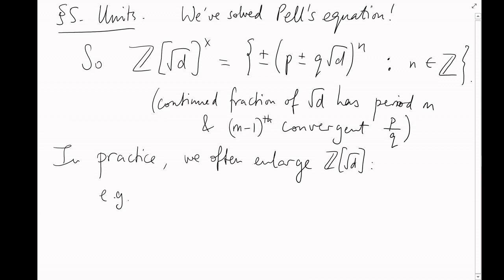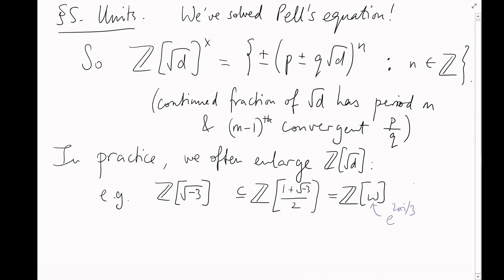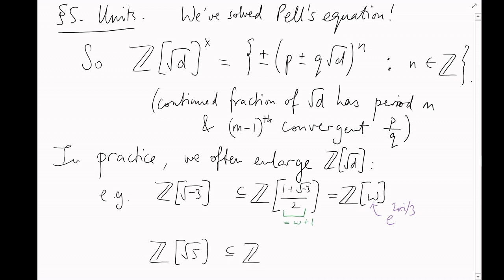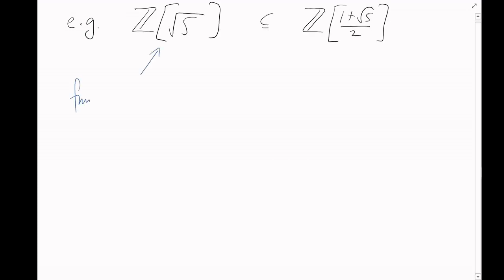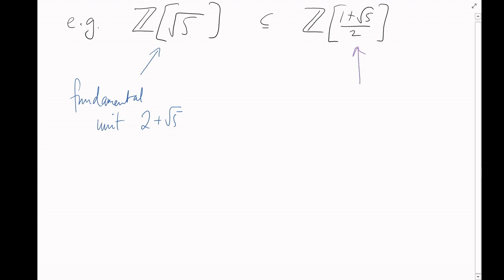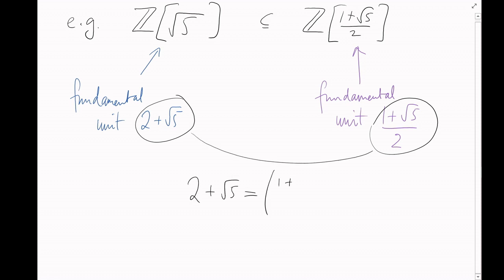In practice, we often want to look at slight enlargements of ℤ[√d]. We've seen this already: rather than ℤ[√(−3)], we considered ℤ[(1 + √(−3))/2], which we called ℤ[ω] where ω = e^(2πi/3). We'll do the same here: instead of ℤ[√5], we'll usually consider ℤ[(1 + √5)/2], whose technical properties are much nicer — both rings on the right are integrally closed. The fundamental unit inside ℤ[√5] is 2 + √5, so this gives us some unit inside the larger ring. It turns out to be the cube of (1 + √5)/2 itself, which is the fundamental unit in this ring.